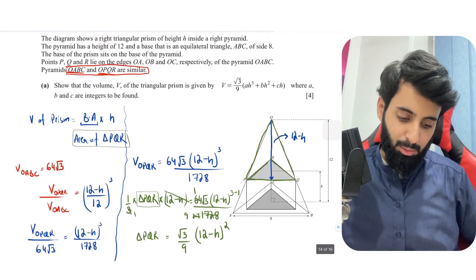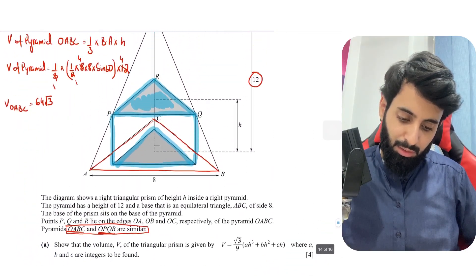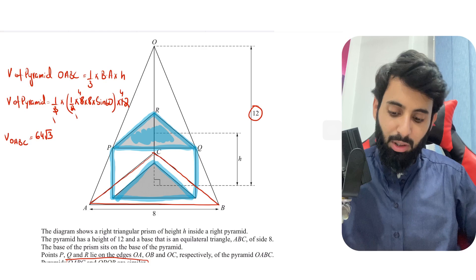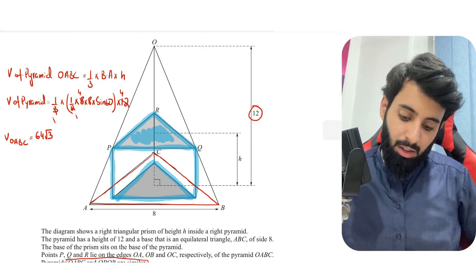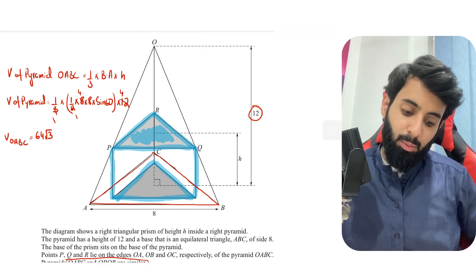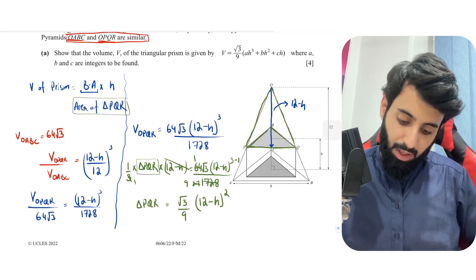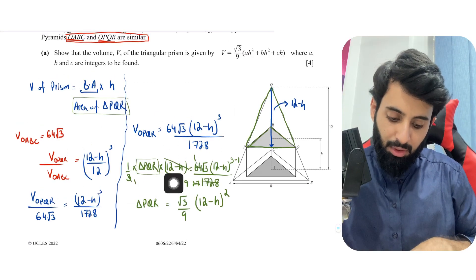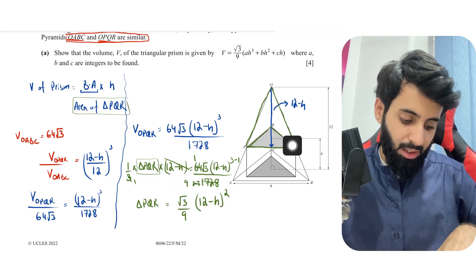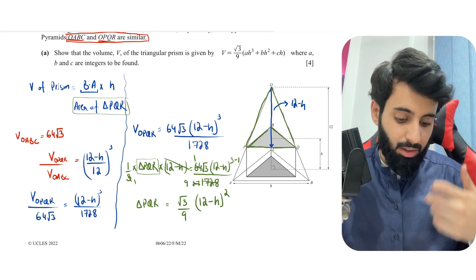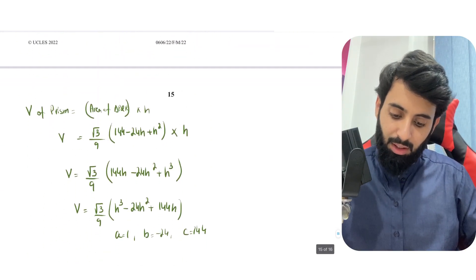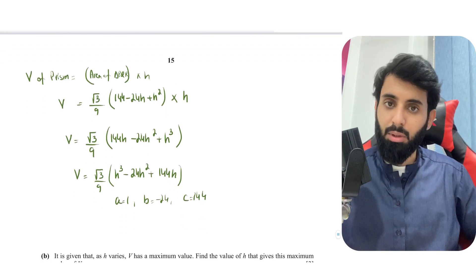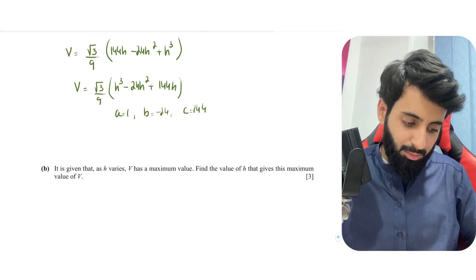To summarise Part A: we used the concept of similar objects to find the volume of the smaller pyramid OPQR in terms of h using the volume of the bigger pyramid. We then equated that with (1/3) × base area × height to find the area of triangle PQR, then multiplied by h to get the volume of the prism.